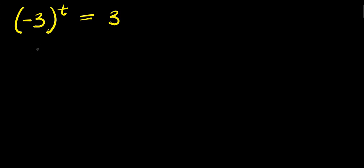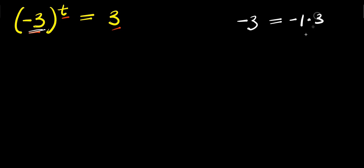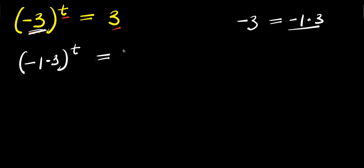Hello, how to solve this exponential problem. We have negative three raised to the power of t, and this equals three. We are solving for the value of t that satisfies this equation. We start by rewriting negative three as negative one times three, so we replace negative three with negative one times three raised to the power of t, and this equals three.